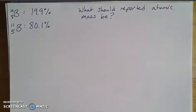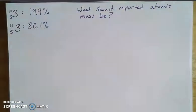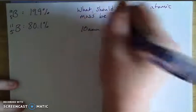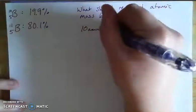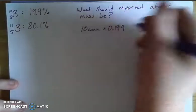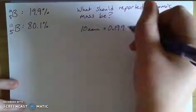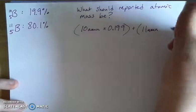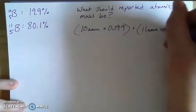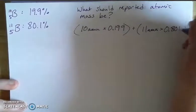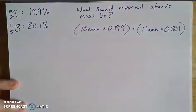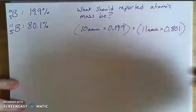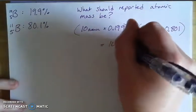Let's verify the math. If I take 10 amu × (19.9/100) and add 11 amu × (80.1/100) — expressing the percentages as decimals — when I add those two terms together, I get 10.801.